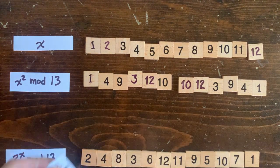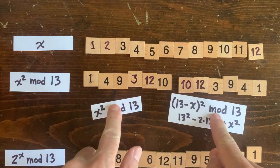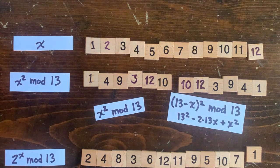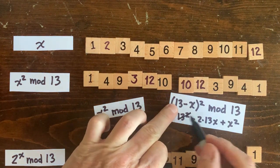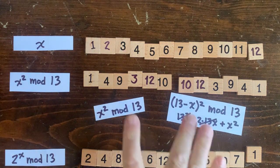So let's compare the remainder of x squared with the remainder of 13 minus x squared, which is this. And since the first two terms are evenly divisible by 13, the overall remainder is the same as x squared's remainder.